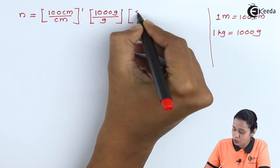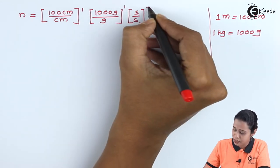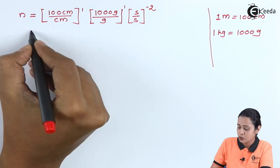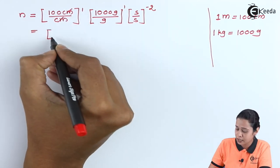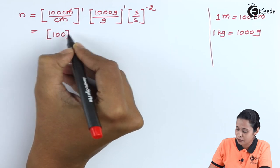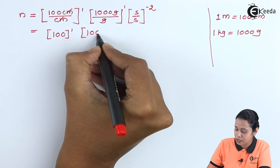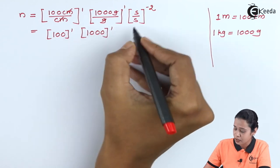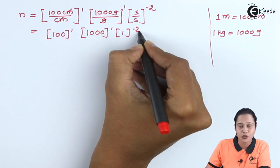Then we have second. In both the units we have second that is same. Here power is 1, here power is minus 2. So this centimeter will get cancelled, here we have 100 power 1. Then gram will also get cancelled, here we have 1000 power 1 and this will get cancelled. So 1, its power is minus 2.